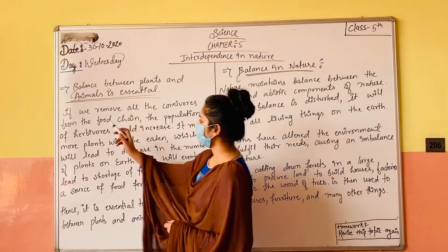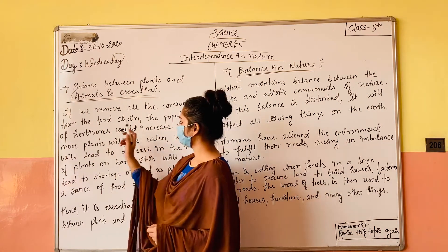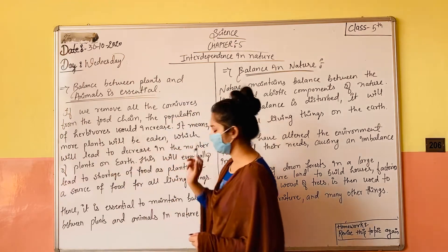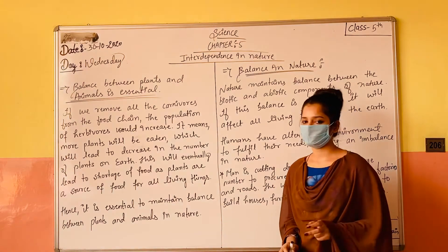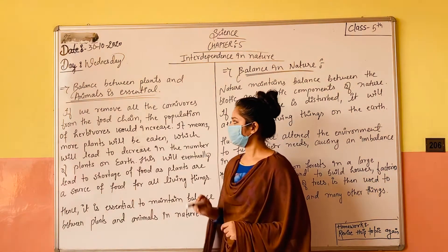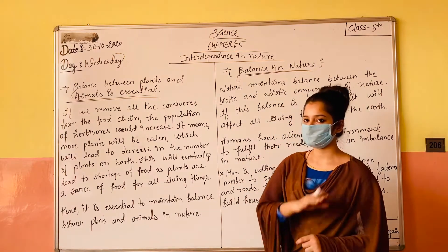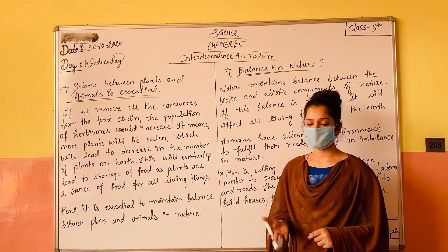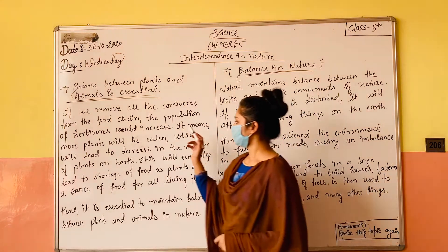If we remove all the carnivores from the food chain, the population of herbivores would increase. Food chain ke baare mein last class mein padha tha, aapko pata hai food chain kya hoti hai. Agar hum food chain mein se saare carnivores ko hata denge, toh aapko khud hi pata hai kya hoga.